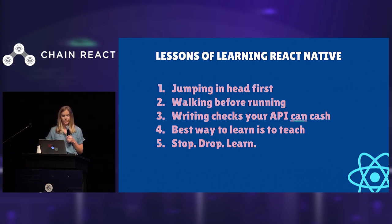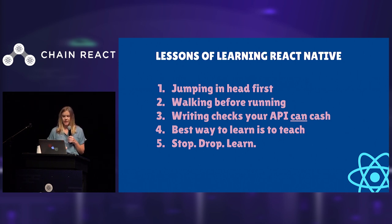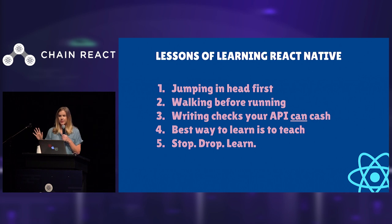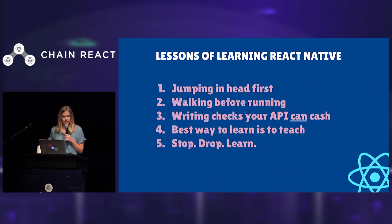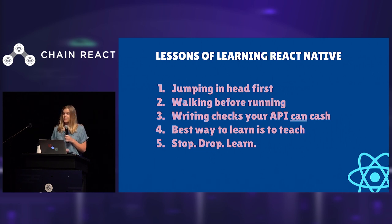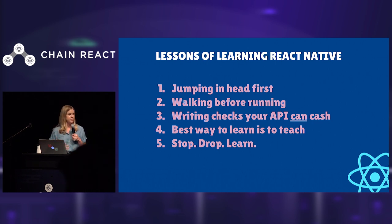Number two: walk before running. We used a lot of technologies as a booster seat for us — we started out small and got a little bigger. Three: writing checks your API can cash. Understanding APIs and where data comes from is like magic at first — where is it coming from? Juniors don't have much information about that. Four: the best way to learn is to teach. This is valuable not just for juniors but for people who work with, teach, and mentor juniors. And the last one: stop, drop, and learn — an environment we started doing at MLS that I'll get into more in a bit.